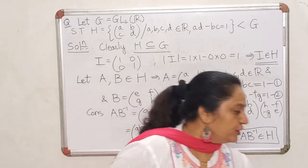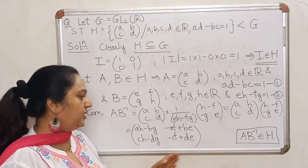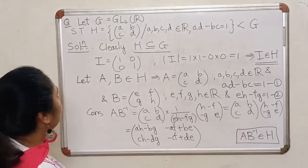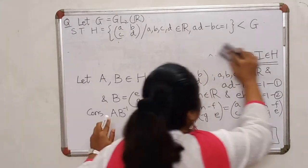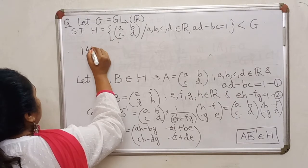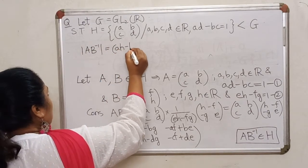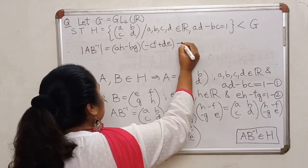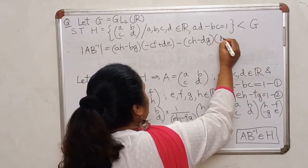This is the matrix A·B⁻¹. Remember, at the end I wish to prove that A·B⁻¹ lies inside H. This is a 2×2 matrix and its entries are real numbers. So the only thing I need to verify is that the determinant of this matrix equals 1.